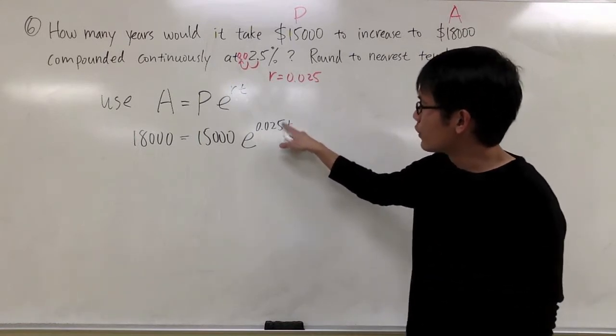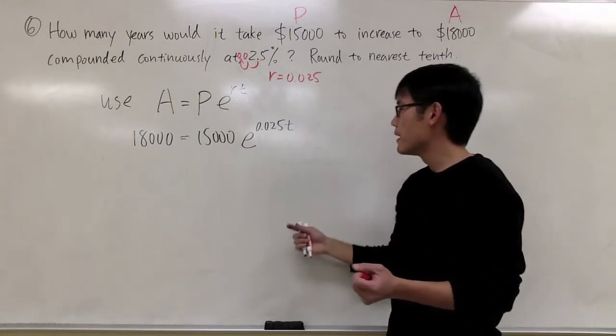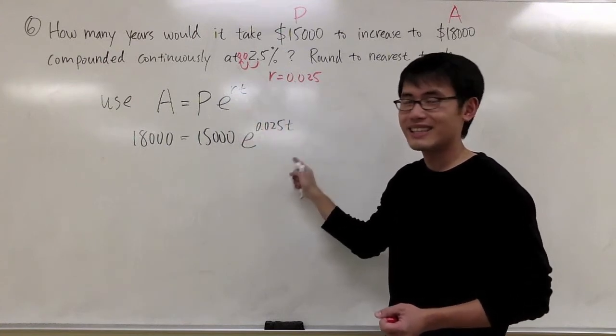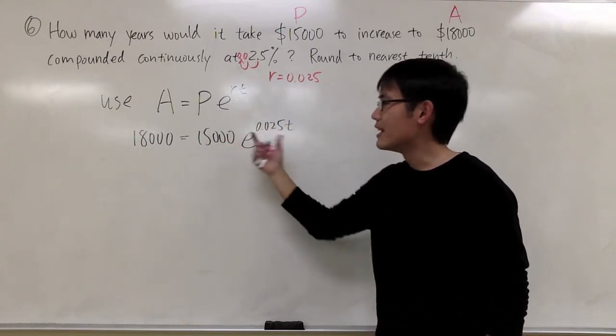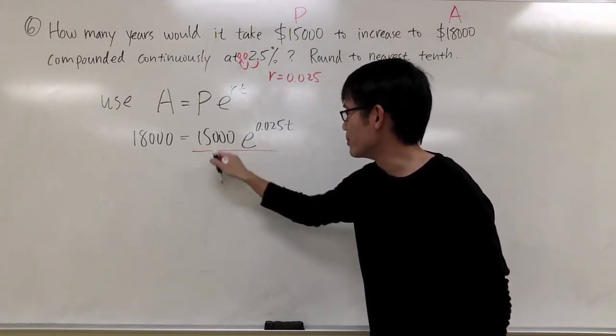So in this equation, notice that the unknown is in the exponent. And to solve for t, in this case, since this is an exponent equation, first of all, let's isolate this part. I have 15,000 times this, so let me divide 15,000 on both sides to begin with.